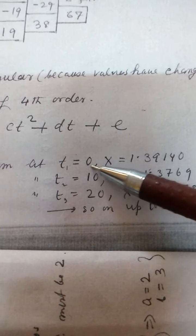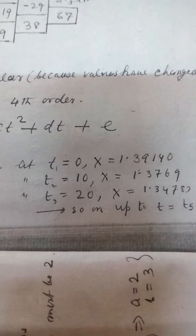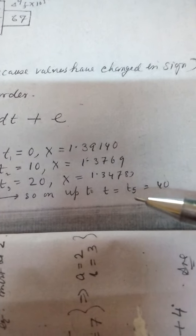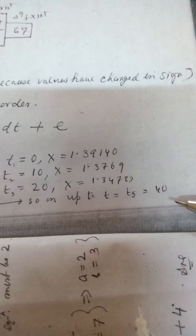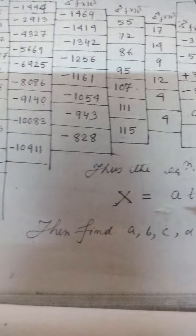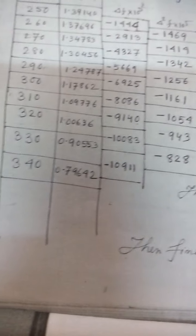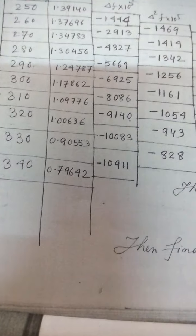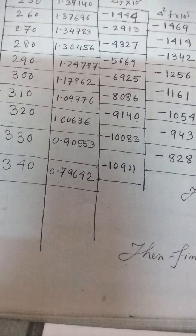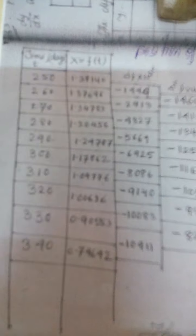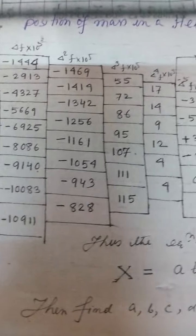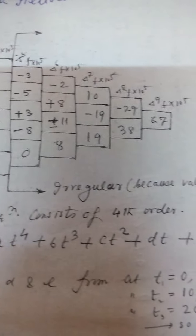The conditions are: t₁=0 with corresponding x value, t₂ and so on up to t₅=340. Using these five data points from the difference table — which I have already explained in the earlier problem — you get the system of equations to solve.